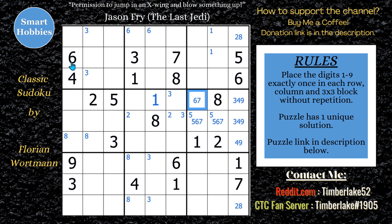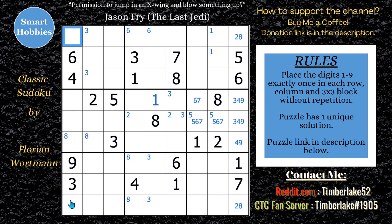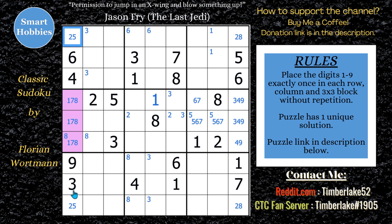If you look over at column 1, we can do the same thing. There's a 6, 4, 9, and 3, and then a 2 and a 5. The 2 and 5 can't be there, so the 2 and 5 have to be on the outside — that's another hidden pair — which makes the 1, 7, 8 a naked triple right there.